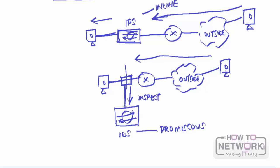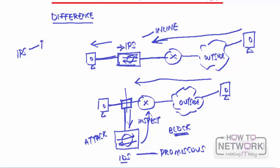The IDS inspects that mirrored traffic and can generate an alarm when an attack is detected. Since the IDS is not placed in-band, its actions are more limited compared to the IPS, but it can instruct a router to block that connection. In general, the IPS prevents or attempts to prevent an attack, while the IDS detects an attack — though it can also attempt to prevent it by controlling other devices.